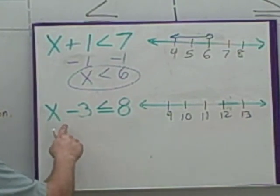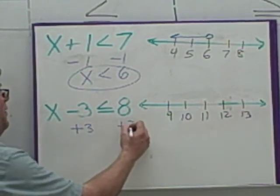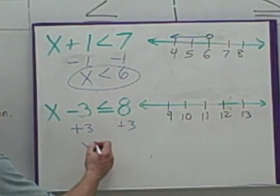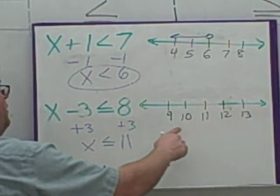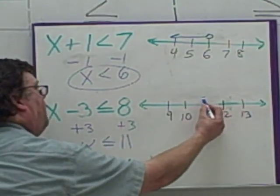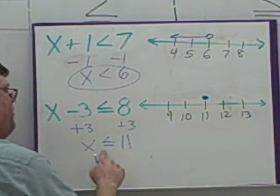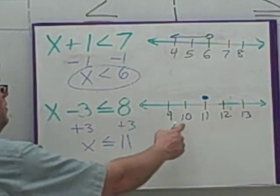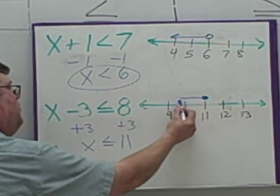Look at this one. We've got x minus three. To do the opposite, we're going to add three to both sides, just like we would with an equation. These will cancel. We're left with x is less than or equal to eleven. When I go to graph it, I'm going to put a full filled-in circle, because I have an or equal to over that eleven. Less than eleven — nine and ten are values less than eleven, so I'm going to go in this direction.